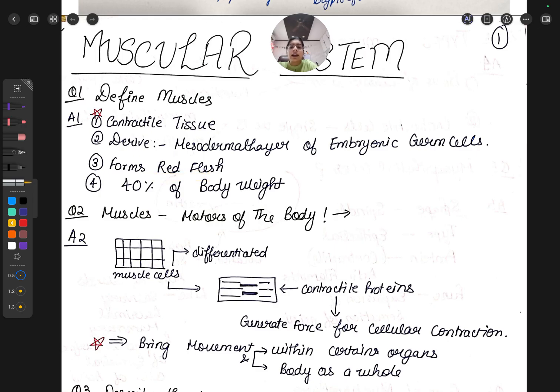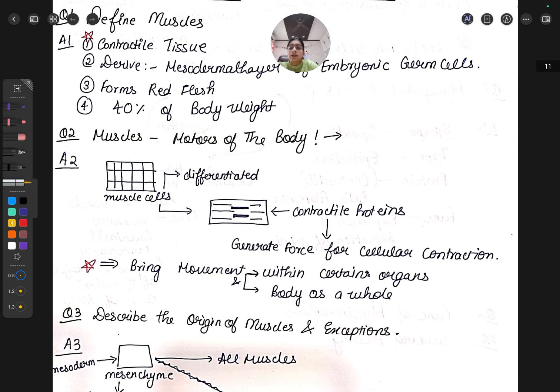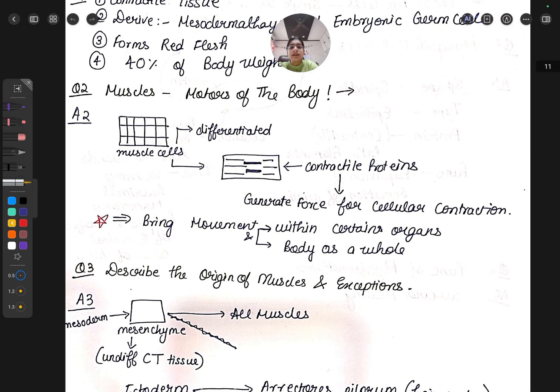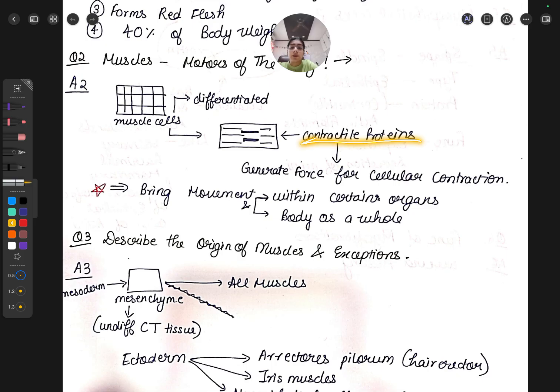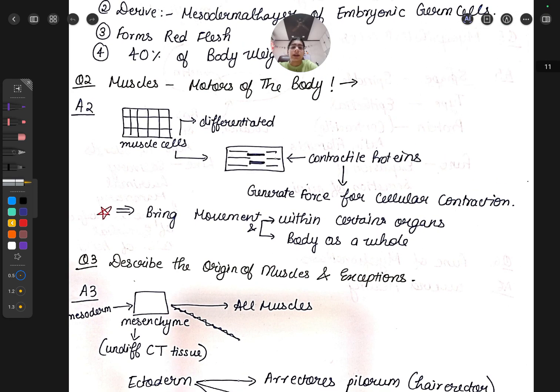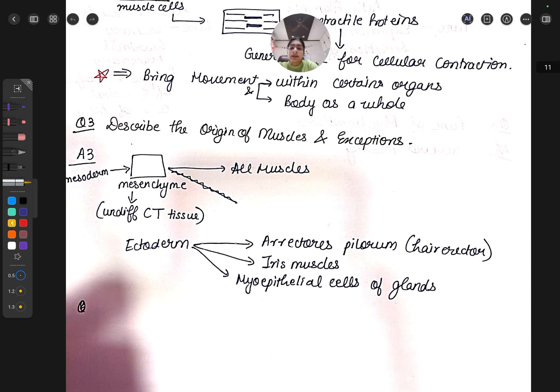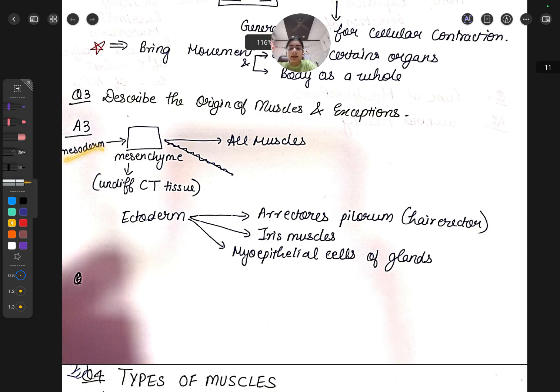Muscles form the red flesh of the body and constitute 40 percent of body weight. Muscles are called the motors of the body. Muscle cells are differentiated cells with contractile proteins that generate force from cellular contraction. Next comes the origin of muscles and exceptions.